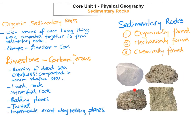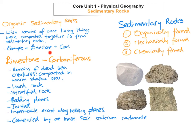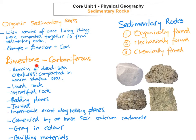Carboniferous limestone is cemented together through a natural cement — calcium carbonate — and it consists of at least 50% calcium carbonate. Its colour is usually grey. Uses of limestone include building materials and raw materials for cement. Limestone is the most common type of rock in Ireland and is exposed in regions such as the Burren in County Clare, where exposed limestone is known as a karst landscape.